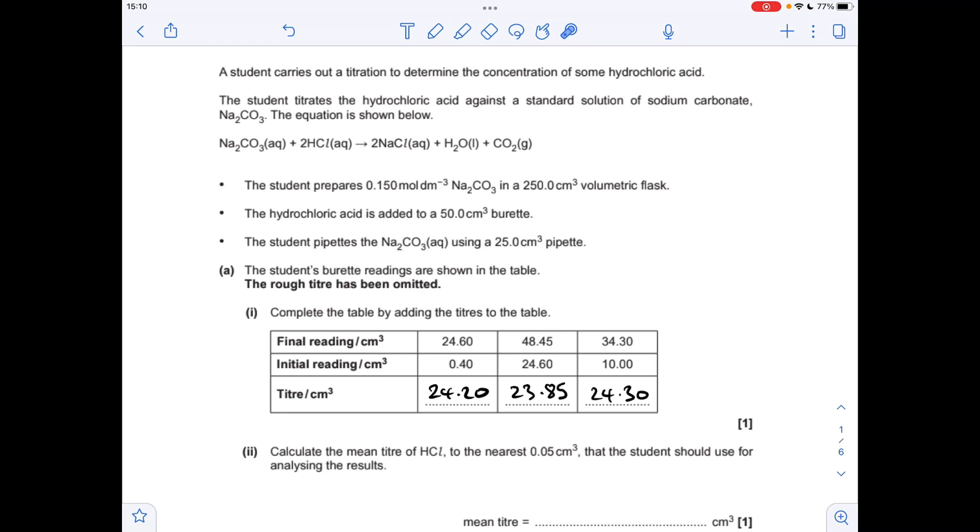To get the mean titre we'll look at concordant results. You can see that the first and the third one are concordant because they're within 0.1 cm cubed of each other, so we'll just take the average of those. The mean titre is 24.25 cm cubed.